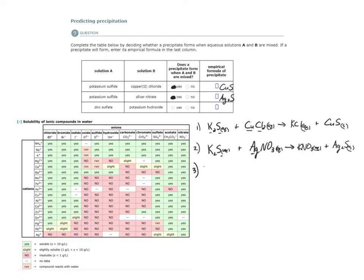The third one is a solution of zinc sulfate. Zinc will be 2+. Sulfate is 2-. So there is the chemical formula. And potassium hydroxide, KOH. It's also a solution.